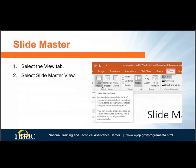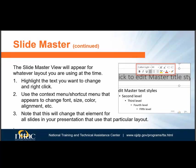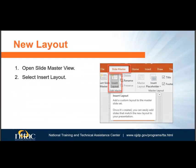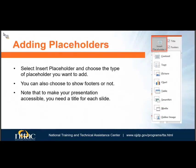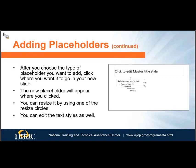Select the View tab, then select Slide Master. Highlight the text you want to change and right-click. A context menu will appear — use this to make changes to the elements, which will apply to all slides for that layout. You may need to repeat this for different layouts in the presentation. If you want to create a completely new layout, open the Slide Master and select Insert Layout. A new slide will appear where you can add content using placeholders — containers for text, tables, or images. You can also choose to show footers or not, and position and resize placeholders as needed.